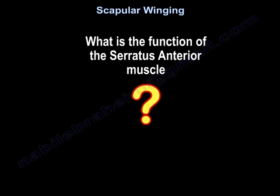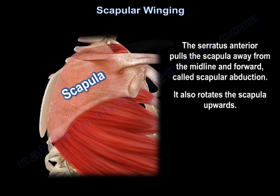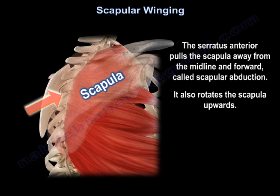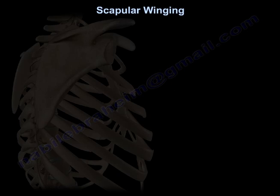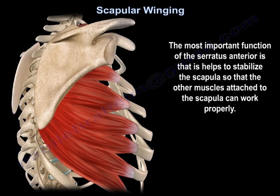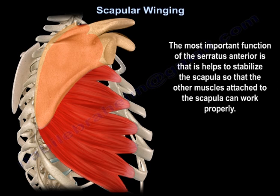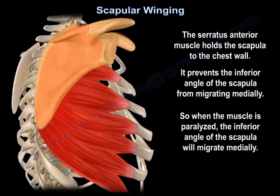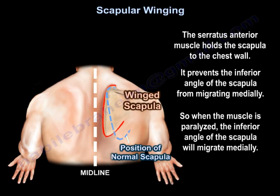Regarding the function of the serratus anterior muscle: it pulls the scapula away from the midline and forward, which is called scapular abduction. It also rotates the scapula upwards. Most importantly, it helps to stabilize the scapula so that the other muscles attached to the scapula can work properly. The muscle holds the scapula to the chest wall and prevents the inferior angle from migrating medially.